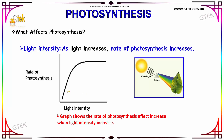Now we are going to see the factors that affect photosynthesis. The first factor is light intensity. If the light increases, then the rate of photosynthesis also increases. Here you can see the graph showing the rate of photosynthesis affected by light intensity — as light intensity increases, the photosynthesis process also increases.